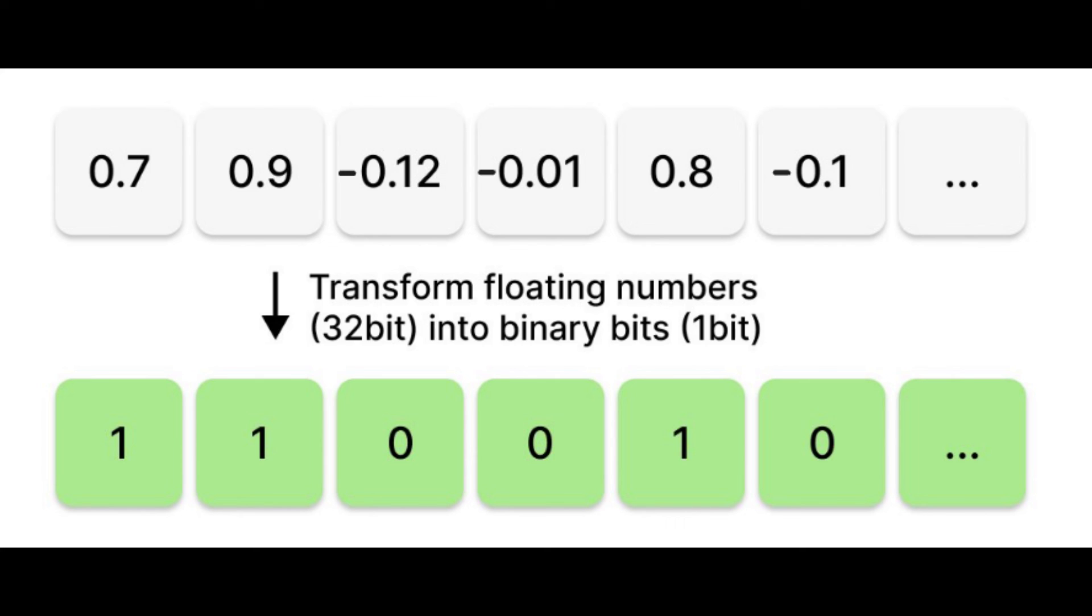Furthermore, binary quantization is a one way street. Once you've converted your data into binary form, there's no turning back. This process is a form of lossy compression. Meaning, once the data has undergone quantization, the original detailed information is irretrievably lost.